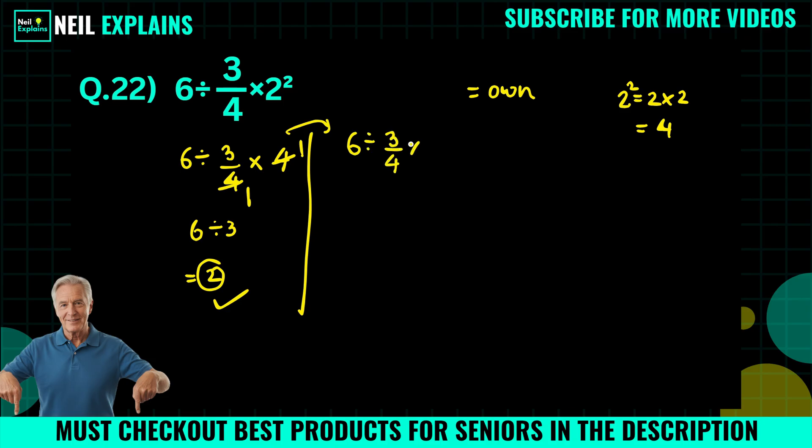So we will rewrite our question again here: 6 divided by 3/4 times 2 square. You can simply write 4 in the place of 2 square, so our question will become 6 divided by 3/4 times 4.